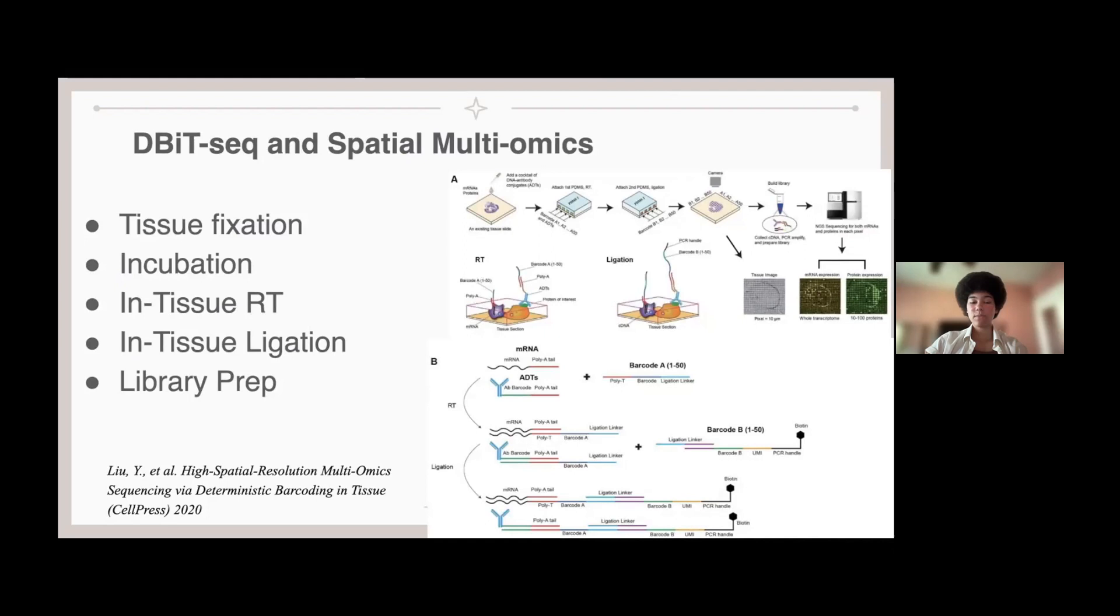After this, the PDMS is added with 50 microchannels on top of the tissue to introduce the first set of barcode, A1 to A50. This barcode contains an oligo DT sequence that binds the poly-A tail of mRNAs and allows for reverse transcription to occur to yield the cDNAs, which are covalently linked to barcodes A1 to A50.